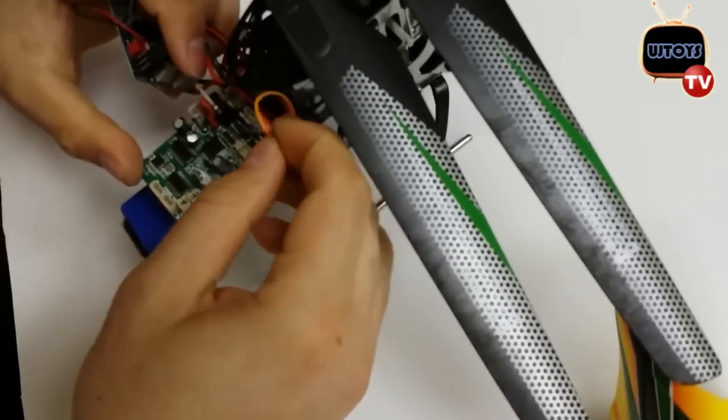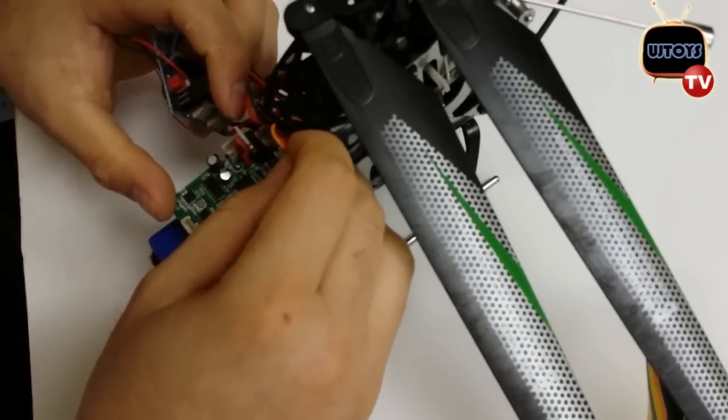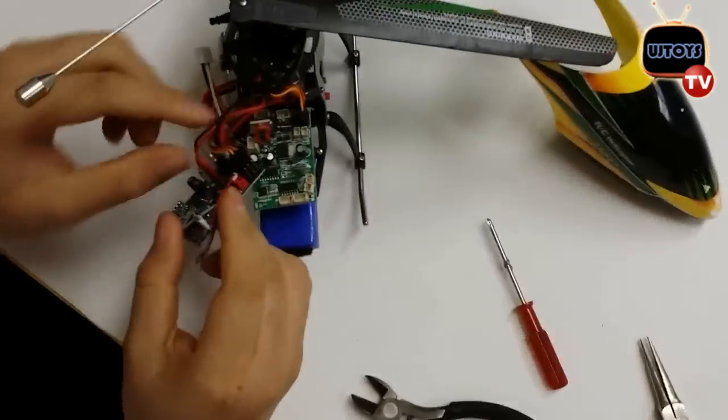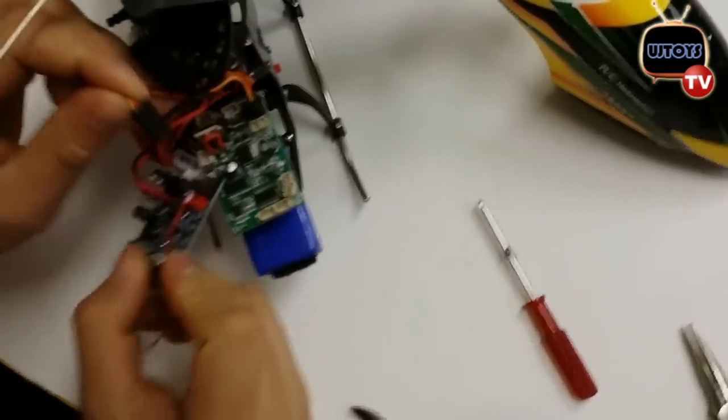Okay, so now you're going to release the battery cables from the main circuit board by soldering it.